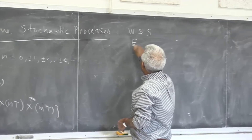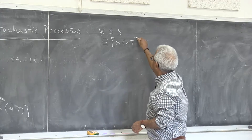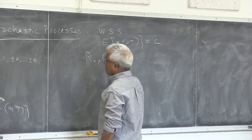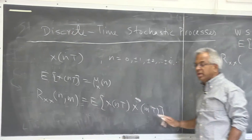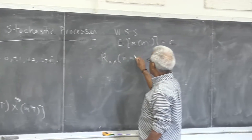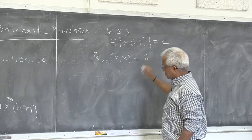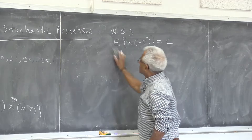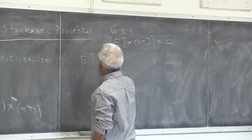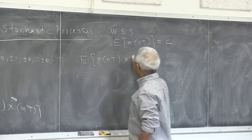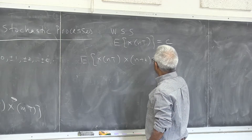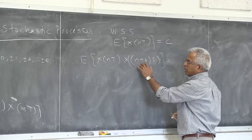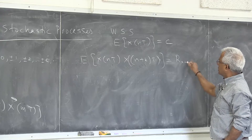Wide-sense stationarity means the expected value of x(nt) is a constant, and the autocorrelation function depends only on n minus m. So the autocorrelation would be the expected value of x(nt) · x((n+k)t), which is only a function of k — written as r_xx(k).